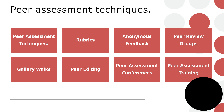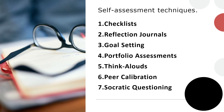For self-assessment techniques, the first tool is checklists: provide students with checklists or self-assessment forms outlining the criteria for success in a particular task or assignment so students can evaluate their own work against the criteria provided. Second are reflection journals — ask students to maintain journals where they regularly reflect on their learning progress, strengths, weaknesses, and areas for improvement, using prompts or guiding questions to scaffold the reflection process.